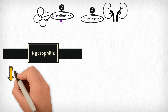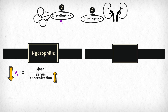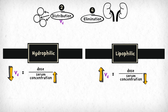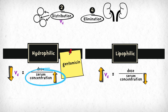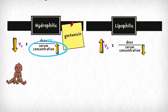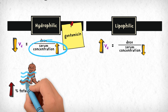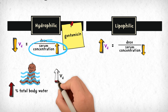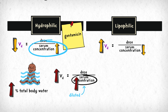Hydrophilic drugs have a low volume of distribution, meaning they concentrate in the serum versus distributing into tissues. Lipophilic drugs distribute into tissues and thus have a high volume of distribution. Gentamicin is a hydrophilic drug, so it concentrates in the serum and has a low volume of distribution. However, neonates have a relatively high percentage of total body water, so gentamicin's volume of distribution is higher in neonates, and they require a higher weight-based dose to reach necessary serum concentrations.